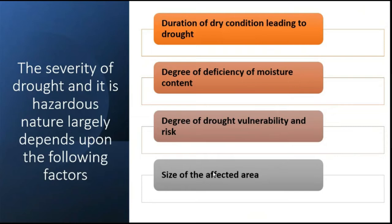The degree of deficiency of moisture content also matters - greater deficiency means greater severity. The degree of drought vulnerability and risk are connected to the community affected. If the community is more dependent on surface water or groundwater and lacks water reserves, that area is highly vulnerable. Areas without forest cover are also more vulnerable, as forests change the microclimate. Drought risk increases when there is less occurrence of monsoon rainfall or western disturbances.